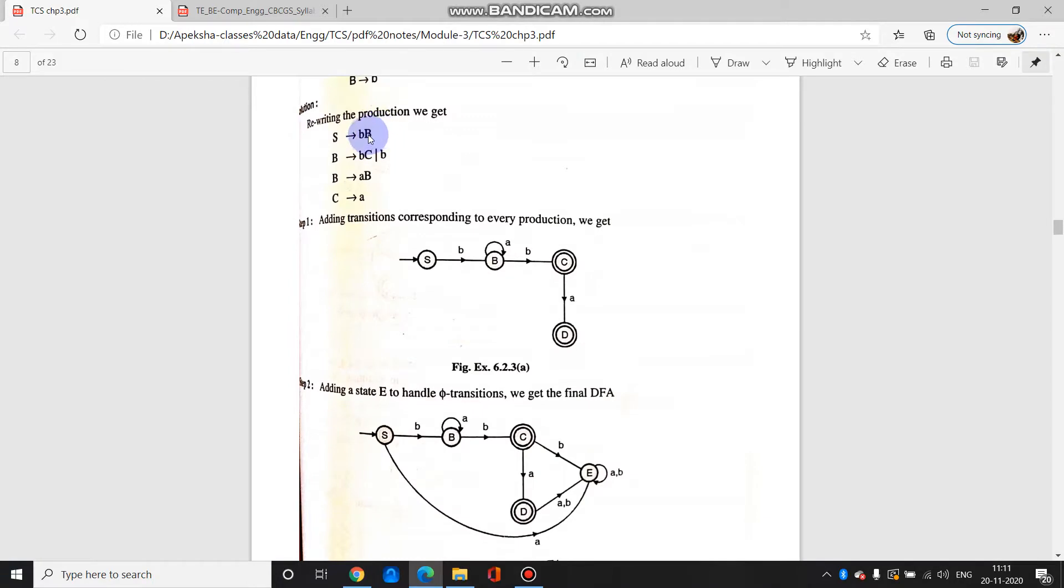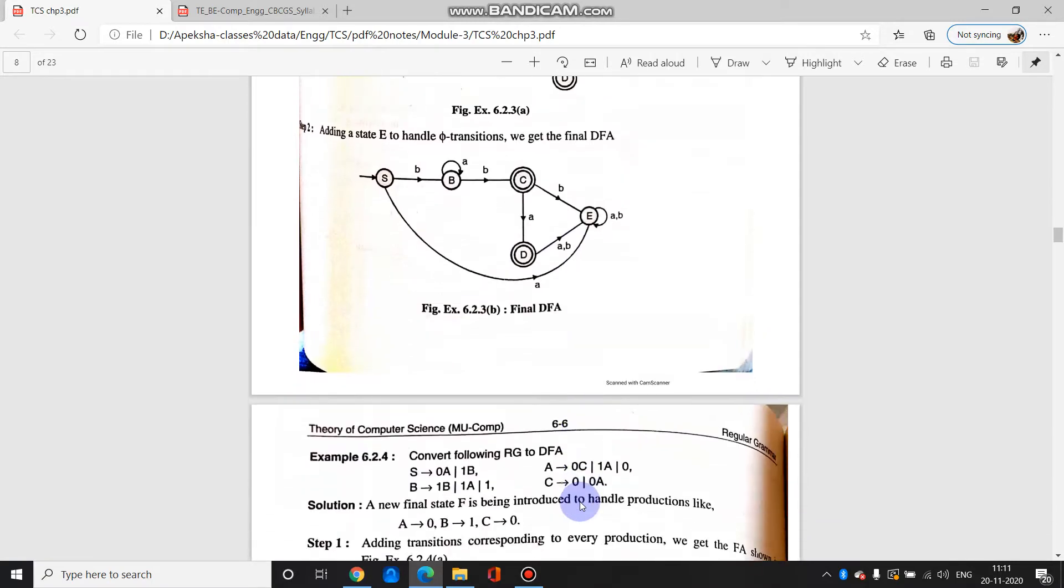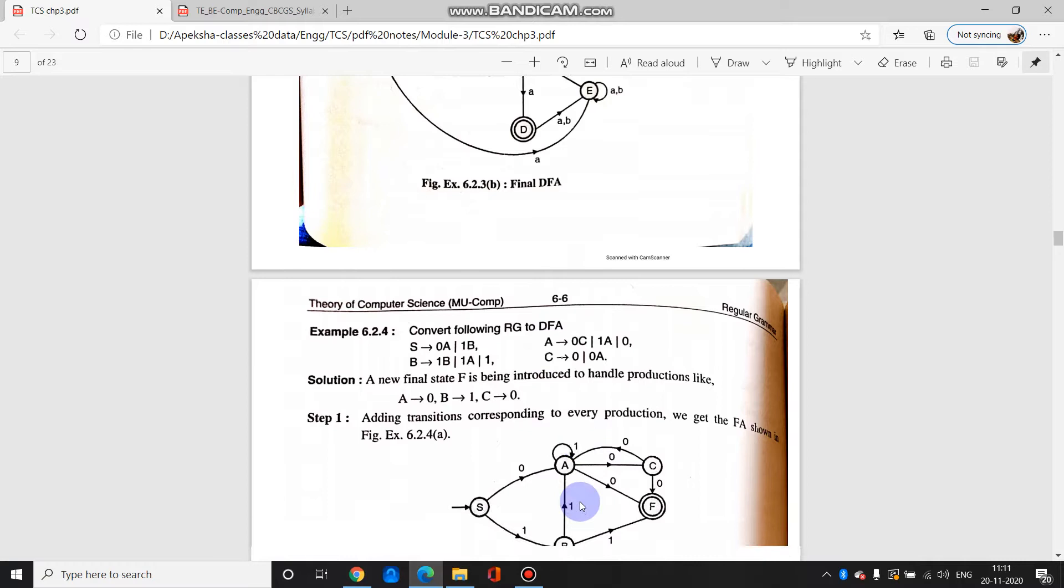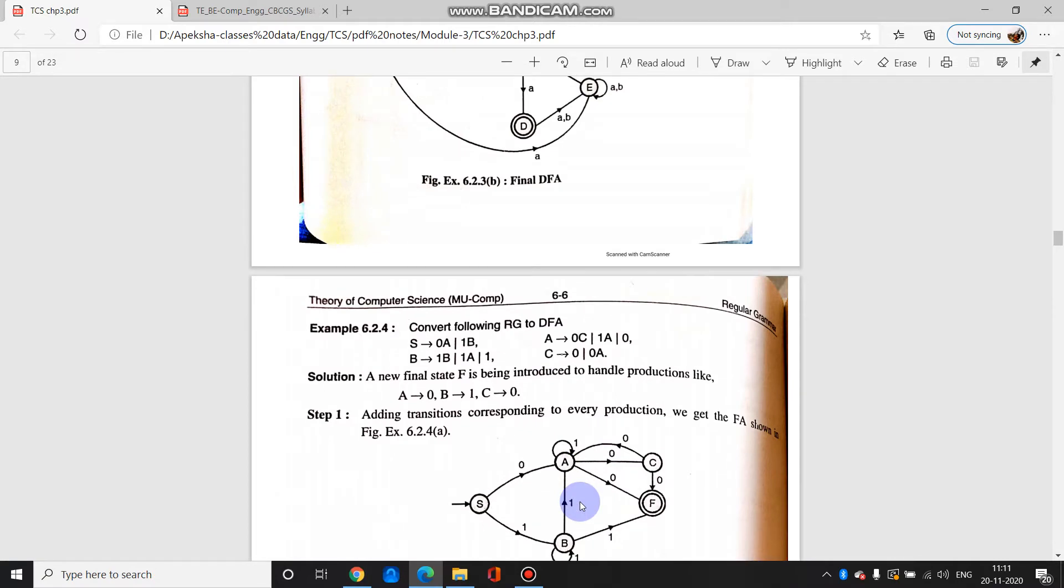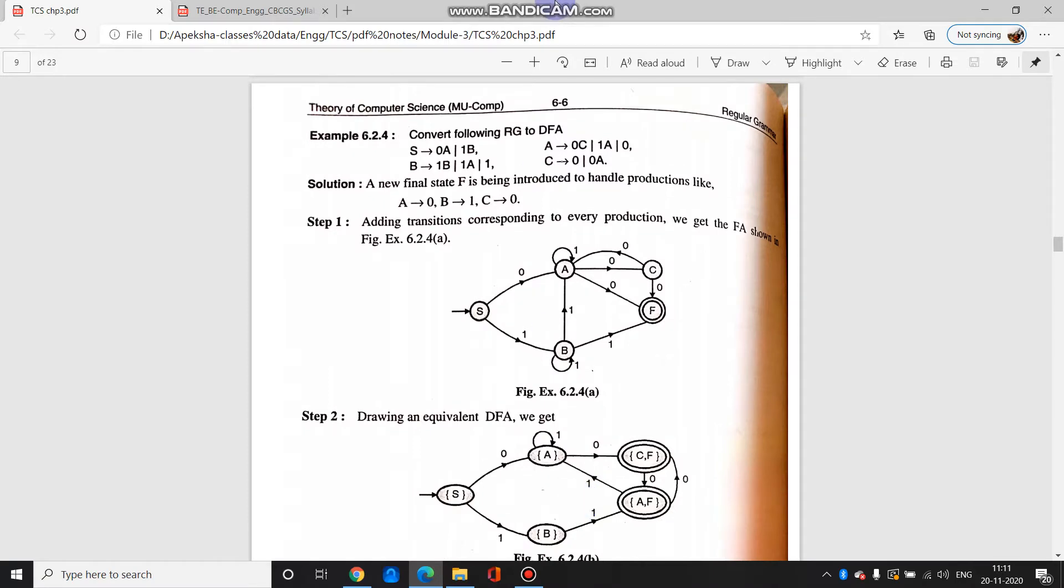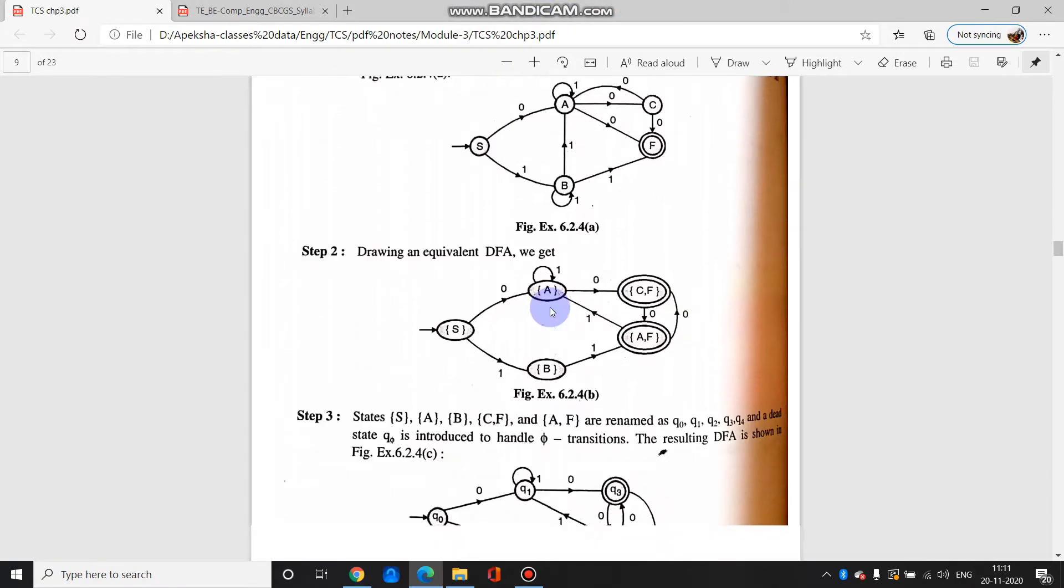In s, if you see, production starts with b. So from s if a comes from the start symbol, it will directly go to e. So that is how they have converted. If you want you can keep it like that, or I would tell you to rename it and give it. Now q0, q1 are your states.